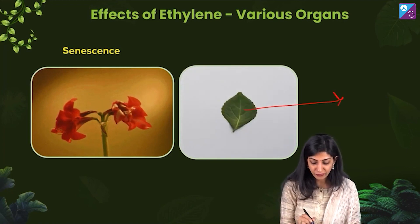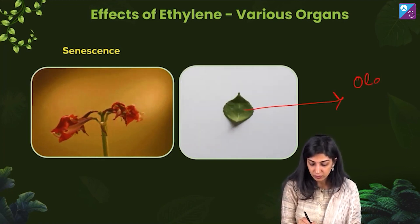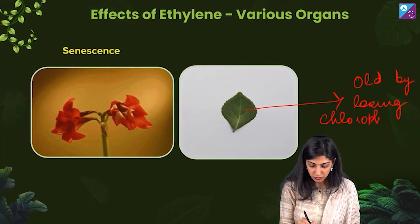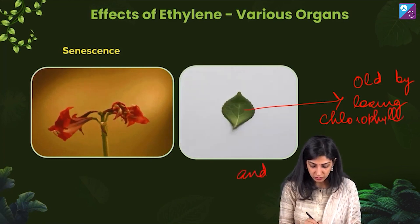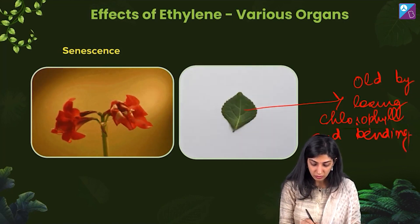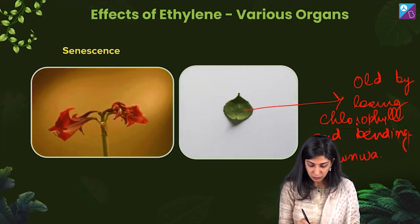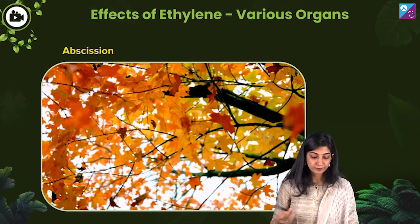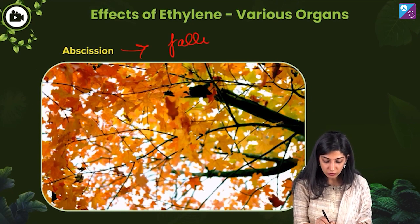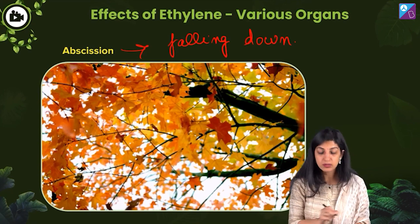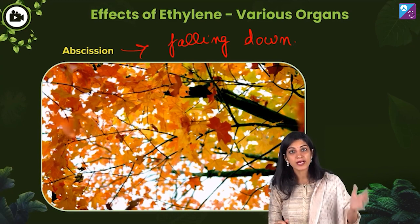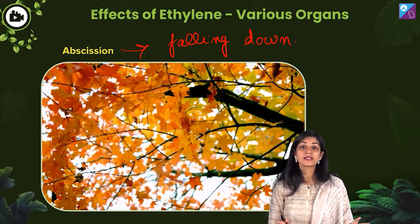So the leaf becomes old by losing chlorophyll and bending downwards. Then abscission, which is nothing but the falling down of various organs. Now that can be indicative of the completion of the life cycle or seasonal as well.